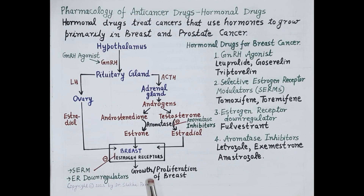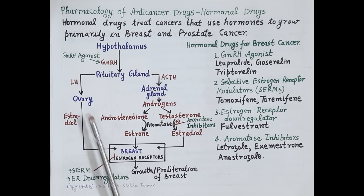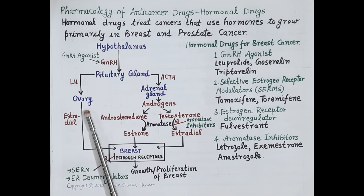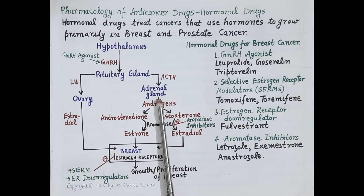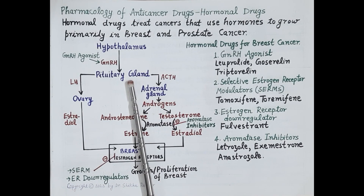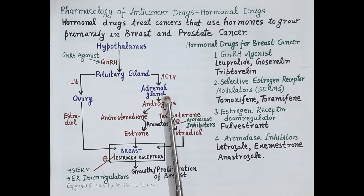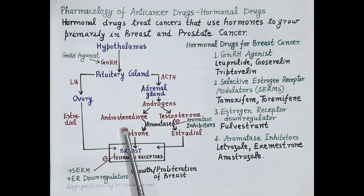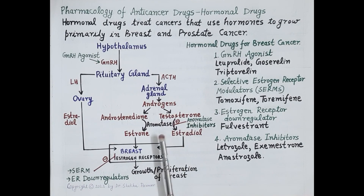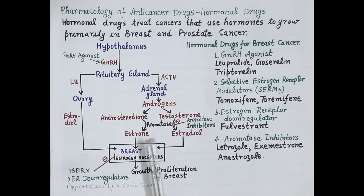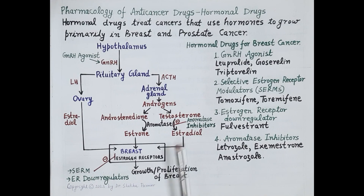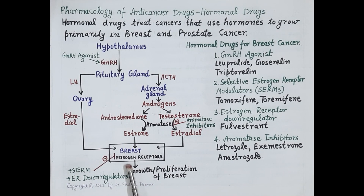LH further stimulates the ovaries to produce estradiol, which binds to estrogen receptors located on breast cells and stimulates their proliferation. The primary source of estrogen is the ovaries; other sources are the adrenal glands and adipose tissue. The anterior pituitary also produces ACTH, which stimulates the adrenal gland to release androgens — androstenedione and testosterone. The enzyme aromatase converts androstenedione to estrone and testosterone to estradiol.